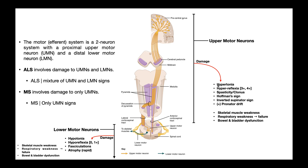Upper motor neuron signs include hypertonic muscles or hypertonia, hyperreflexia with deep tendon reflexes graded 3+ or 4+, spasticity, clonus, Hoffman's sign, inverted supinator sign, and a positive pronator drift test. For damage to lower motor neurons, we see lower motor neuron signs: hypotonia, hyporeflexia with deep tendon reflexes graded 0 or 1+, muscle fasciculations, and rapid atrophy. All these things can manifest as skeletal muscle weakness, eventually leading to paralysis, and respiratory weakness eventually leading to respiratory failure.